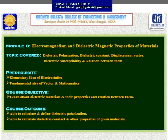The prerequisites for this topic are an elementary idea of electrostatics and a fundamental idea of vectors and mathematics. The course objective is to learn about dielectric materials and their properties and the relations between them. After completion, students will be able to calculate and define dielectric polarization, dielectric constant, and other properties of a given material. These are the course outcomes.